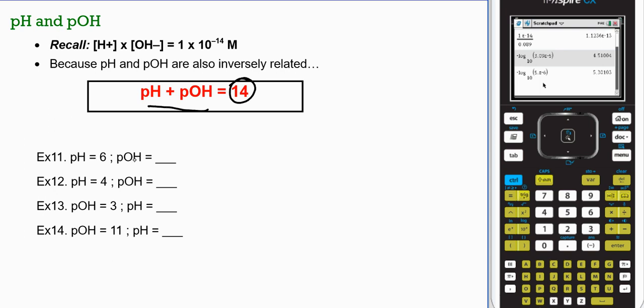When pH is 6, pOH must be 6 from 14 gives 8. Now, if pH is 4, 4 from 14 is 10. My pOH must be 10.